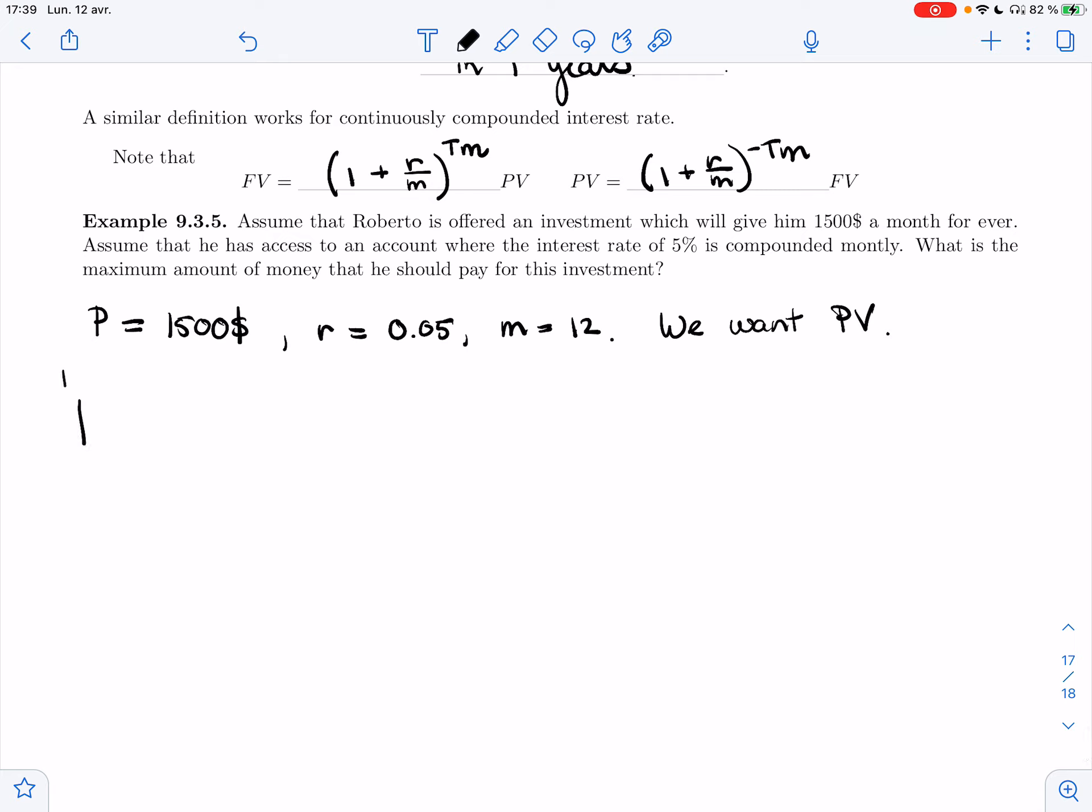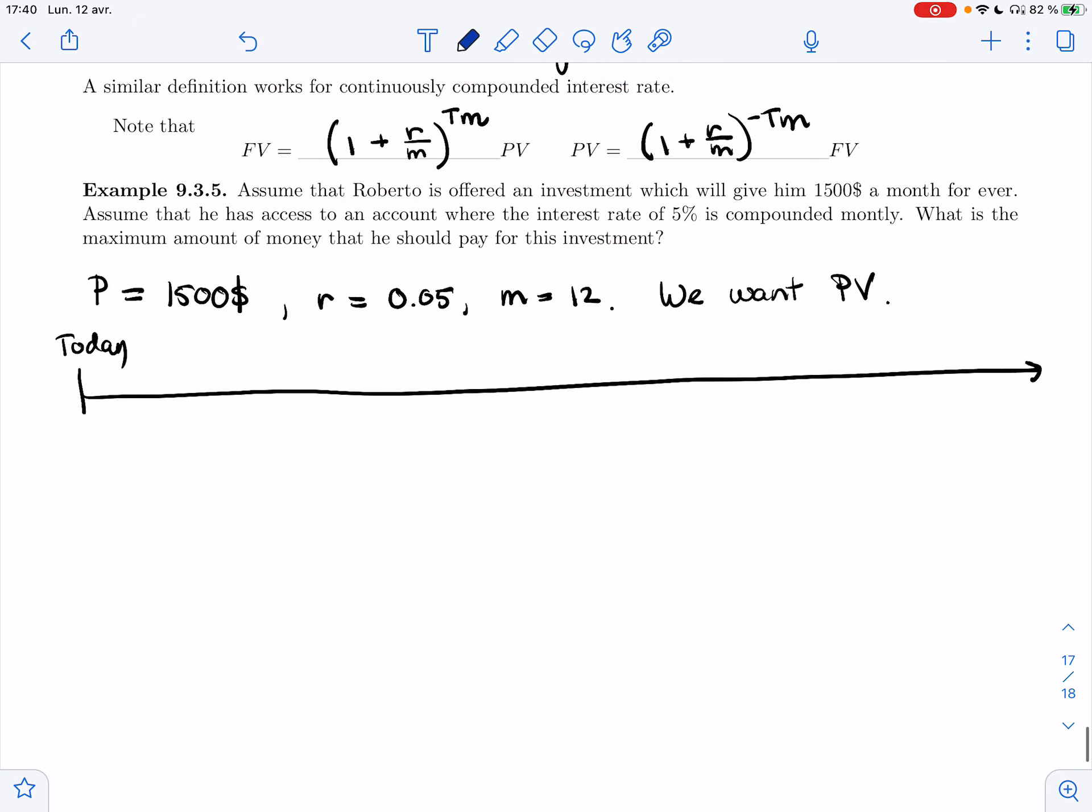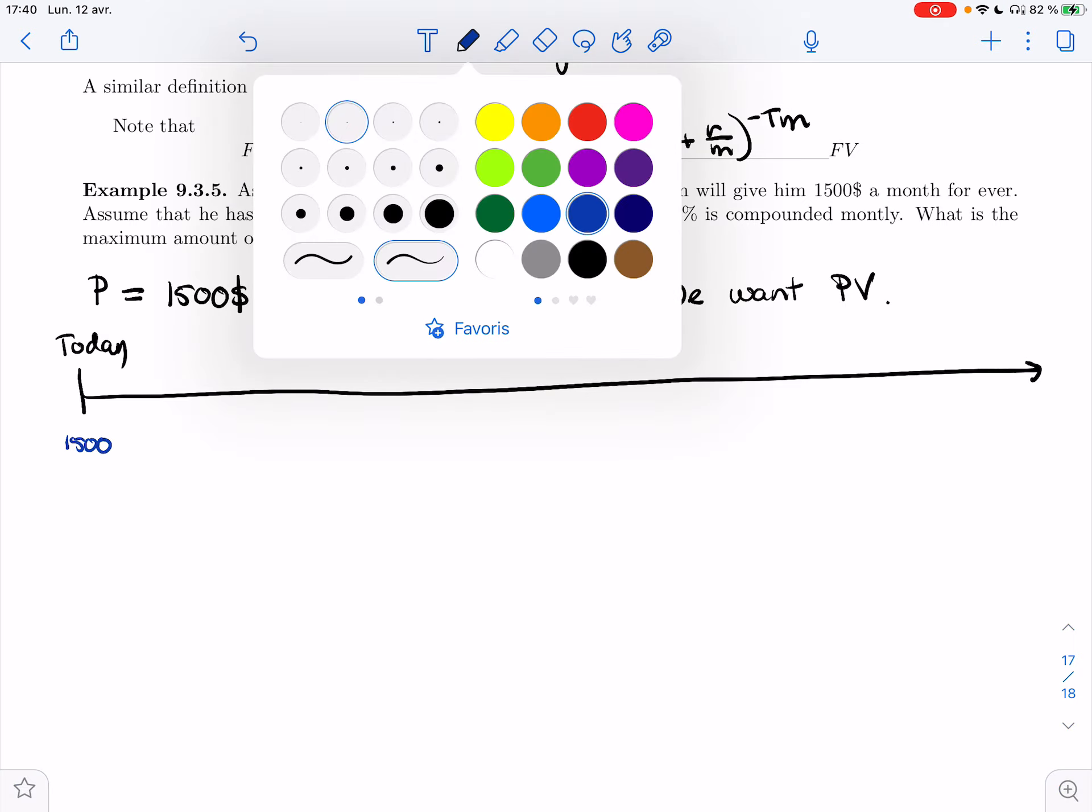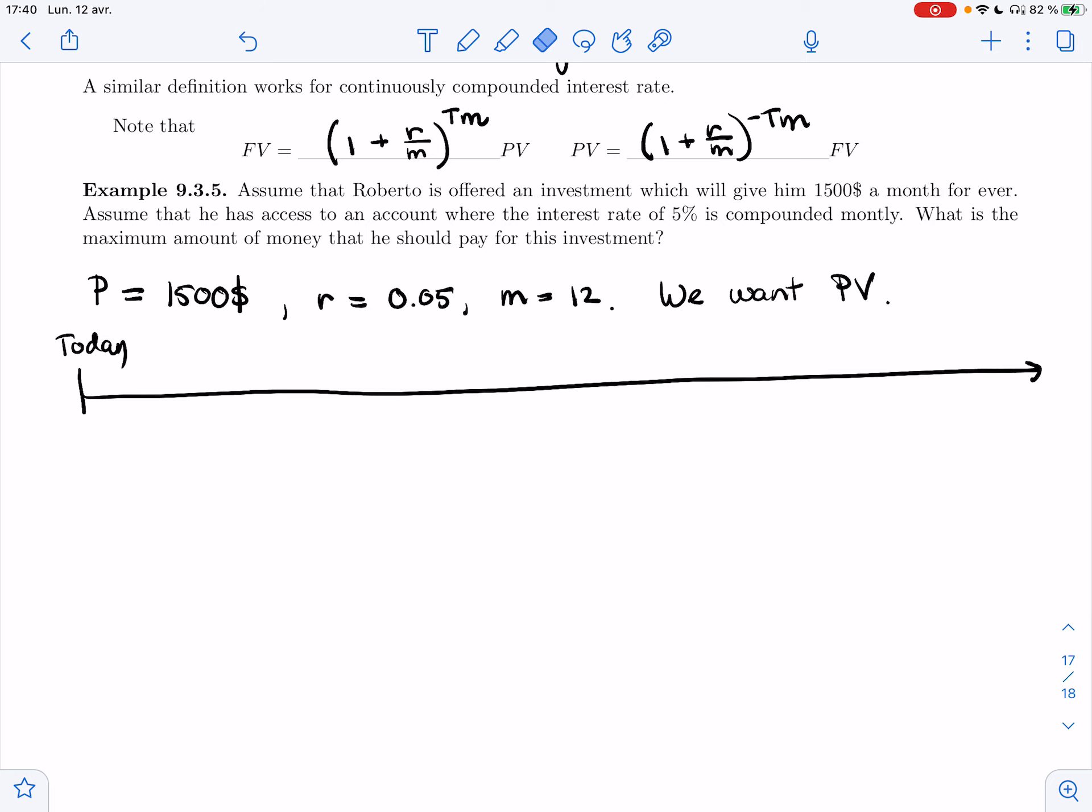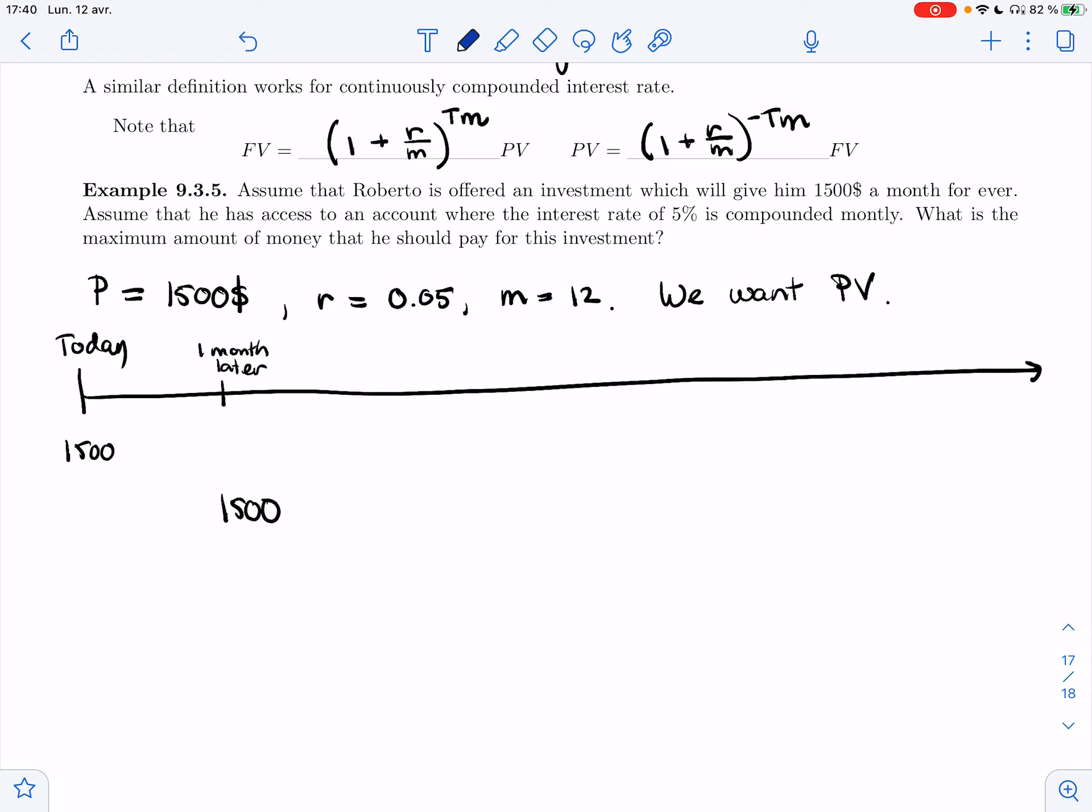So let's make our diagram. So this is today. And now the diagram goes on forever. A bit crazy, but it works. So he gets $1,500 today. That's worth today, $1,500. He gets $1,500 in a month. Now that's $1,500 in a month.